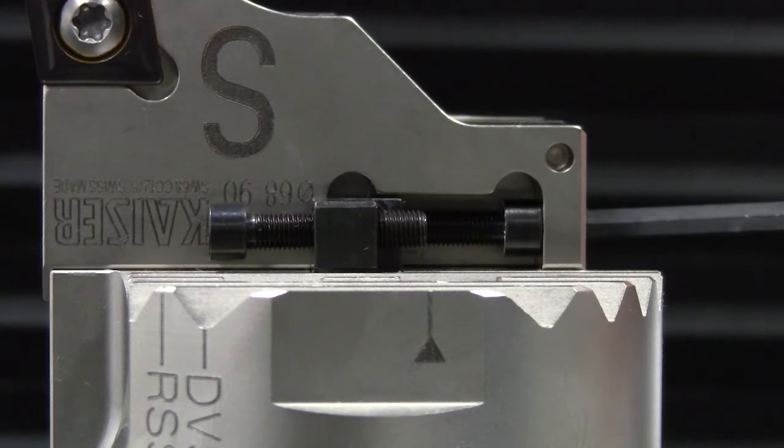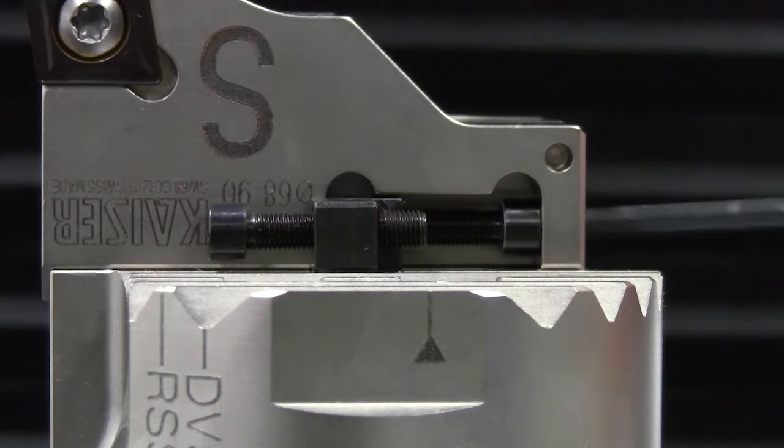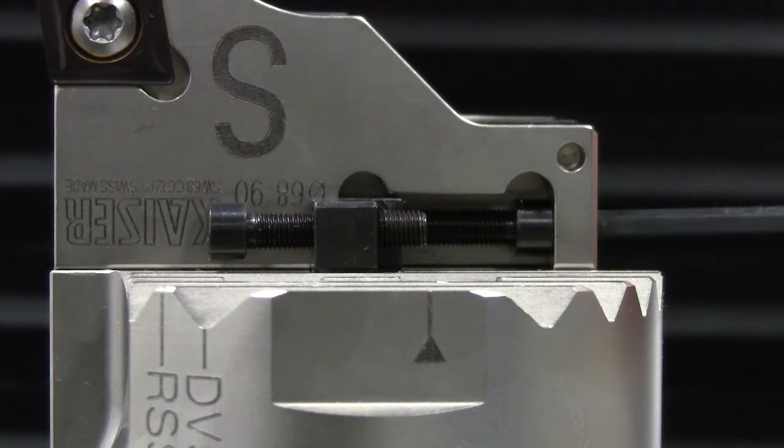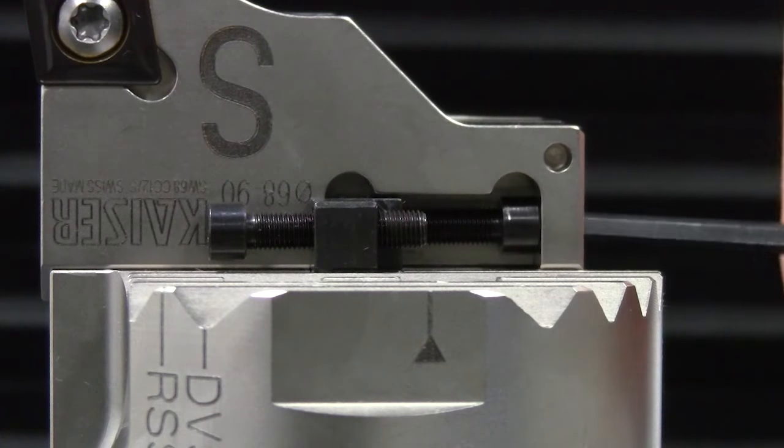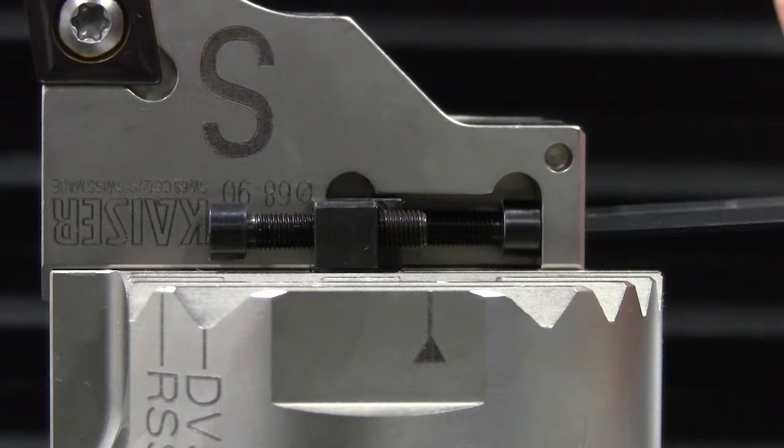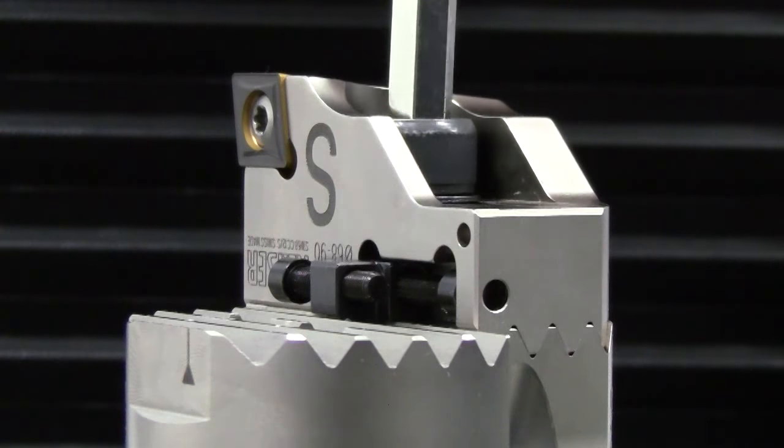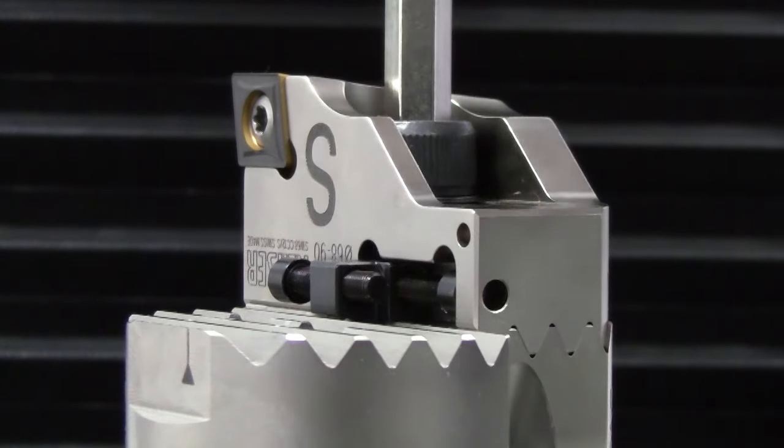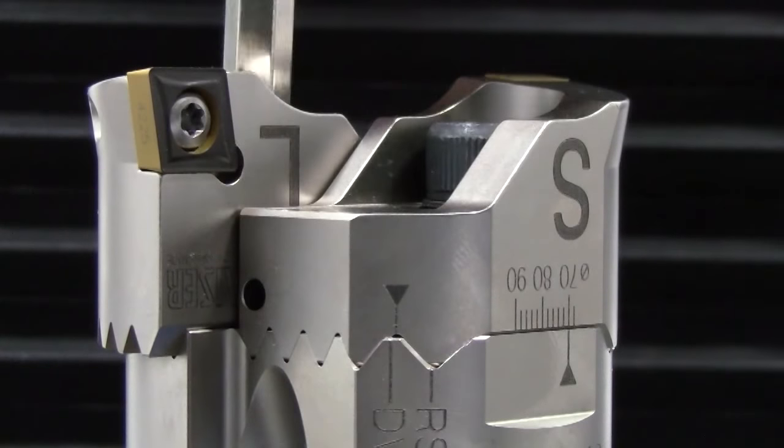Because the adjustment screw is contained by the slot in the insert holder, positive and negative diameter adjustments can be made by this single screw. Once the diameter adjustment has been made, tighten the locking screw and repeat the procedure with the other insert holder.